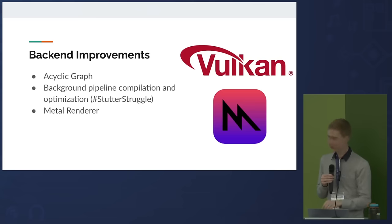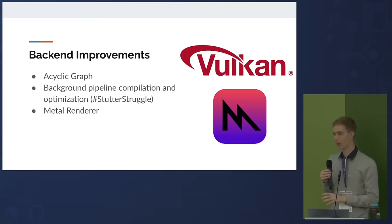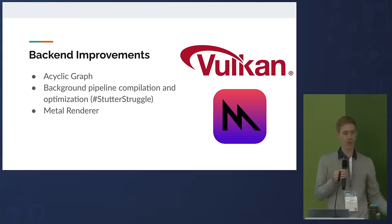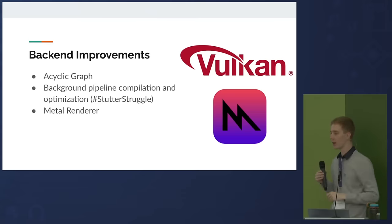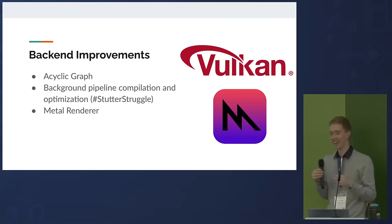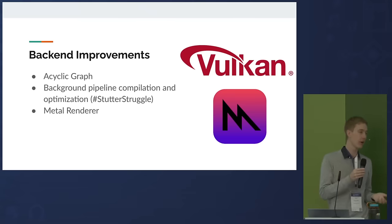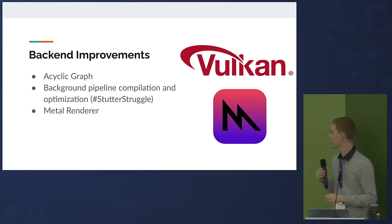We also hope to start work on a Metal renderer soon. Metal is the equivalent of Vulkan for Apple devices. We currently have a translation layer that translates Vulkan to Metal — it works, but it's not as fast as we want and is very hard to debug. So we want to write a proper Metal backend.